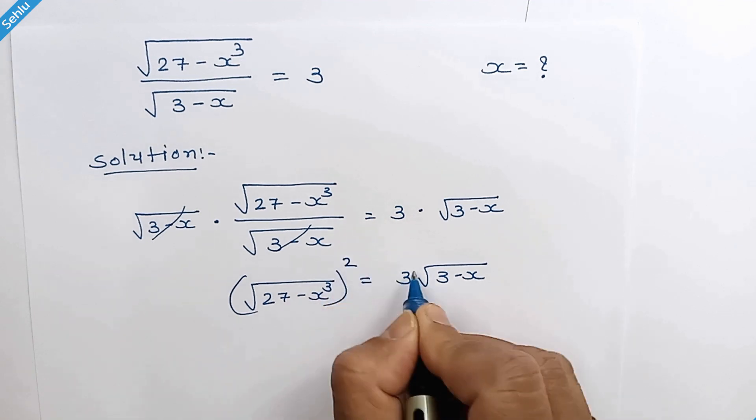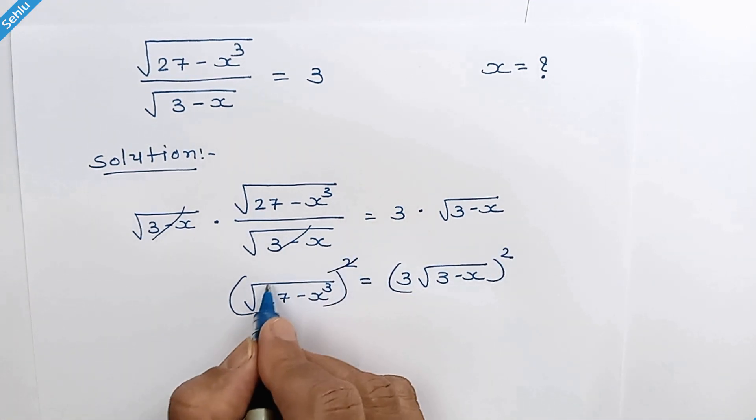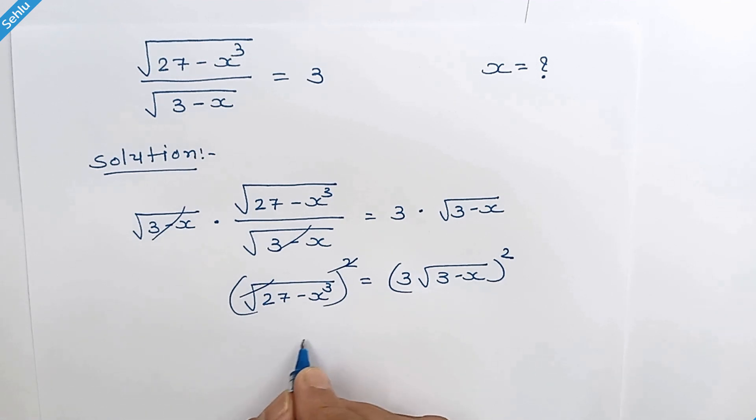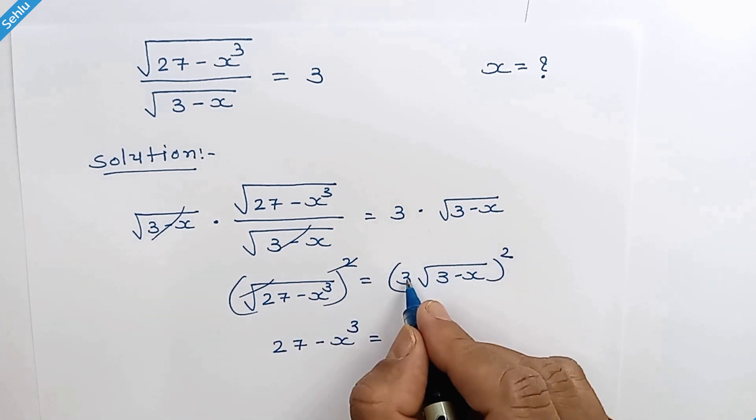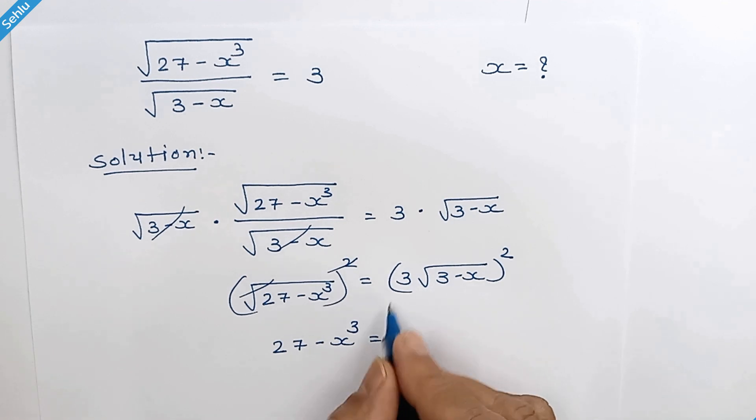Squaring both sides. The square and square root will cancel each other. Now we have 27 minus x cube here. This square belongs to 3 and also belongs to the square root. So here we have 3 squared is 9 times 3 minus x.